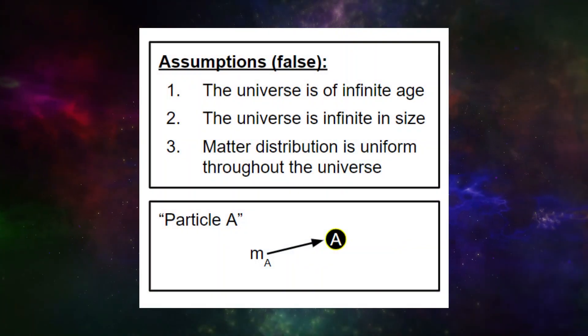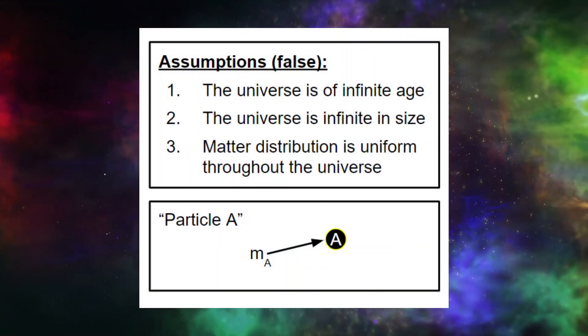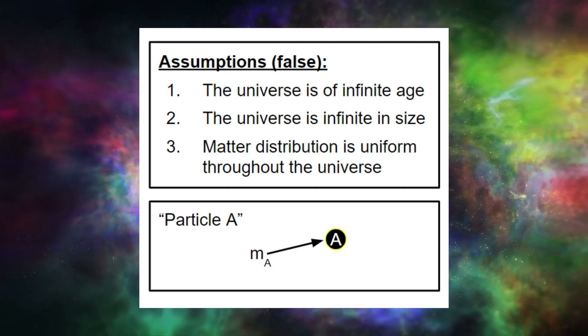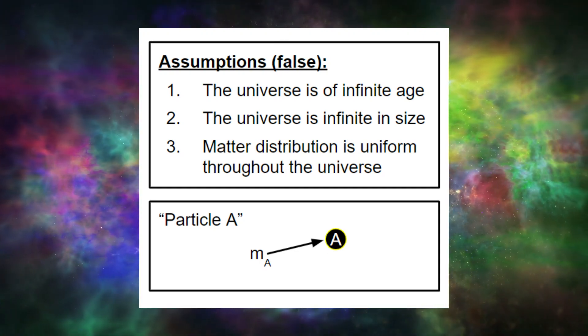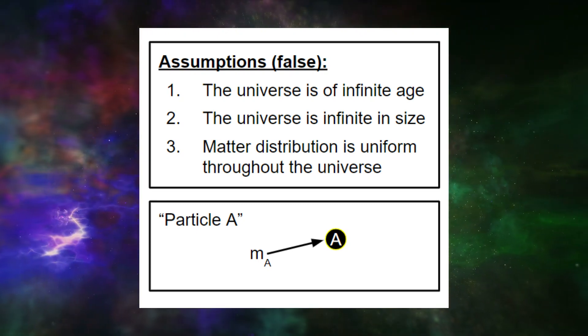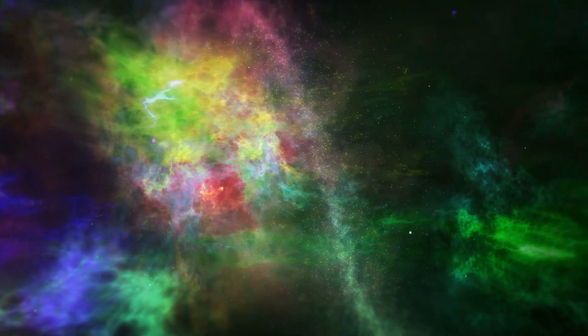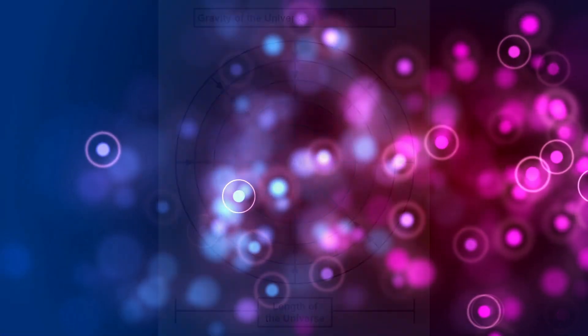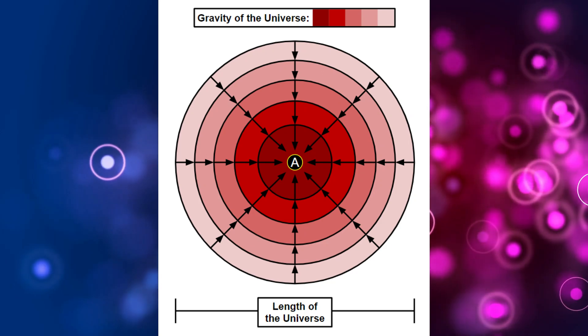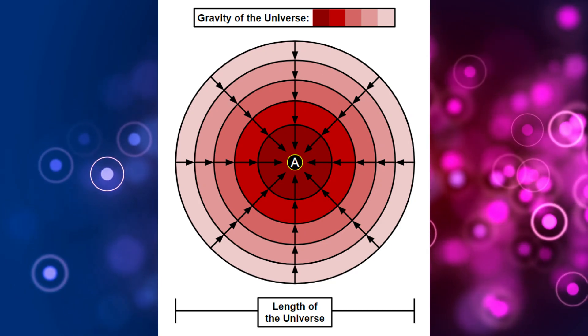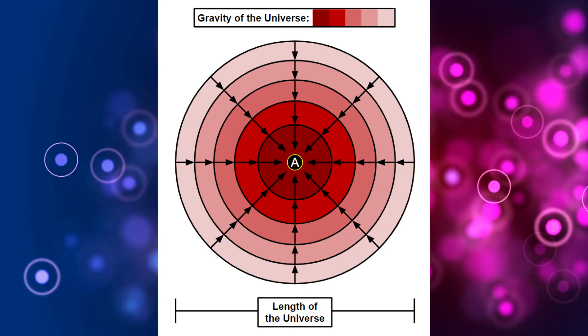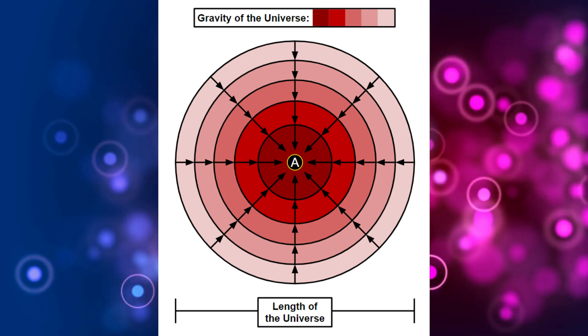Imagine we live in such a universe where these inaccurate parameters are correct and we take a random test particle that we call particle A with mass m. We're going to try and calculate the gravitational force exerted on this particle by the infinite and uniform universe. For simplicity, we're going to consider all of the mass in the universe to surround the test particle in concentric circles, similar to how a bullseye on an archery board is surrounded by concentric circles to form a target.